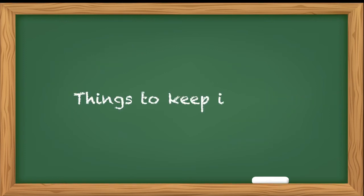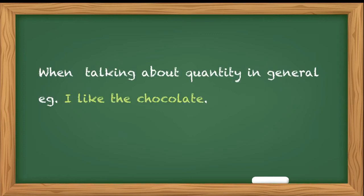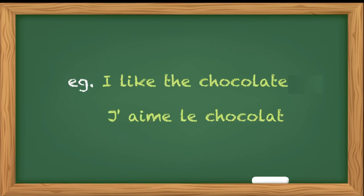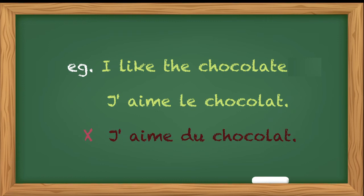There is one more thing we have to note. If we are talking about the quantity in general, for example, I like the chocolate, here we will not use the partitive article. Rather we are going to use definite article. So this sentence will be j'aime le chocolat, and we are not going to make j'aime du chocolat. We are talking in terms that I generally like the chocolate, so it's not in terms of some.